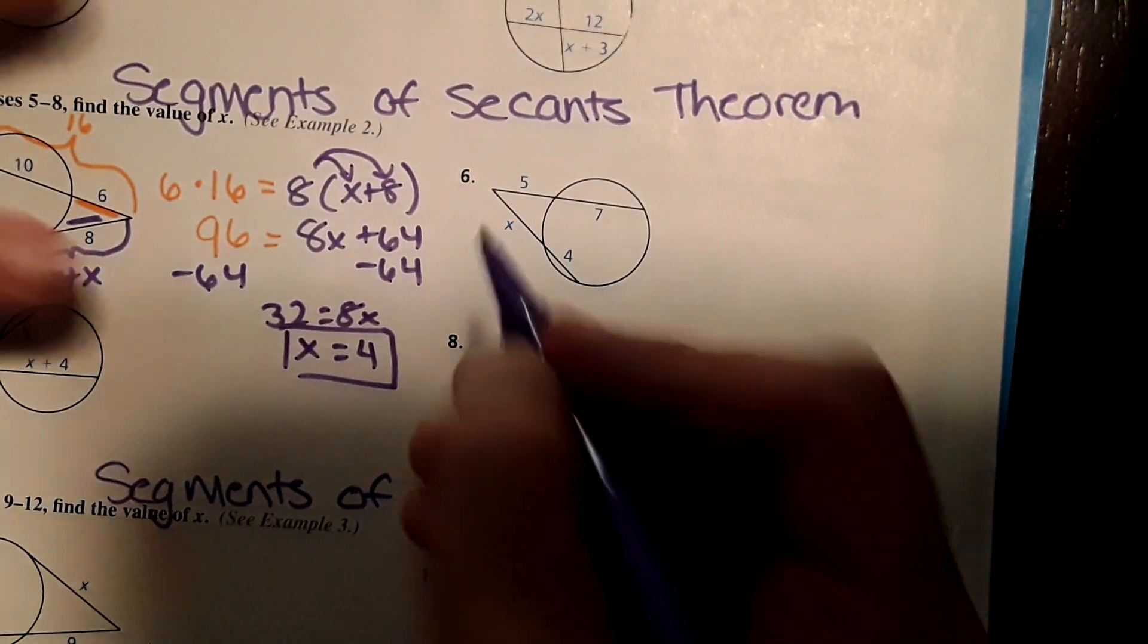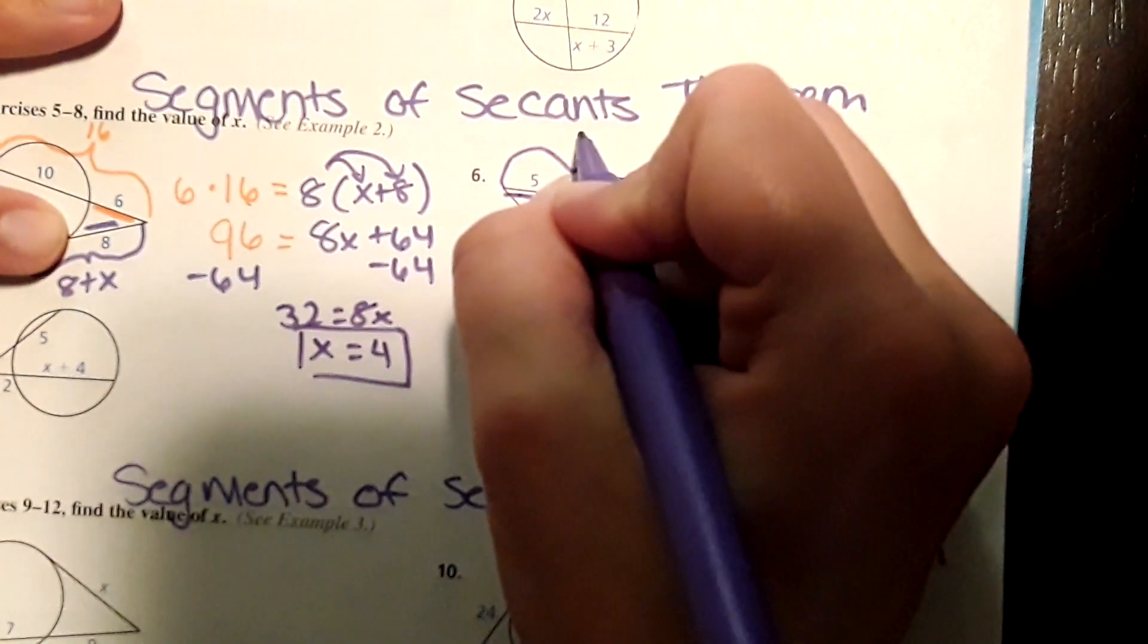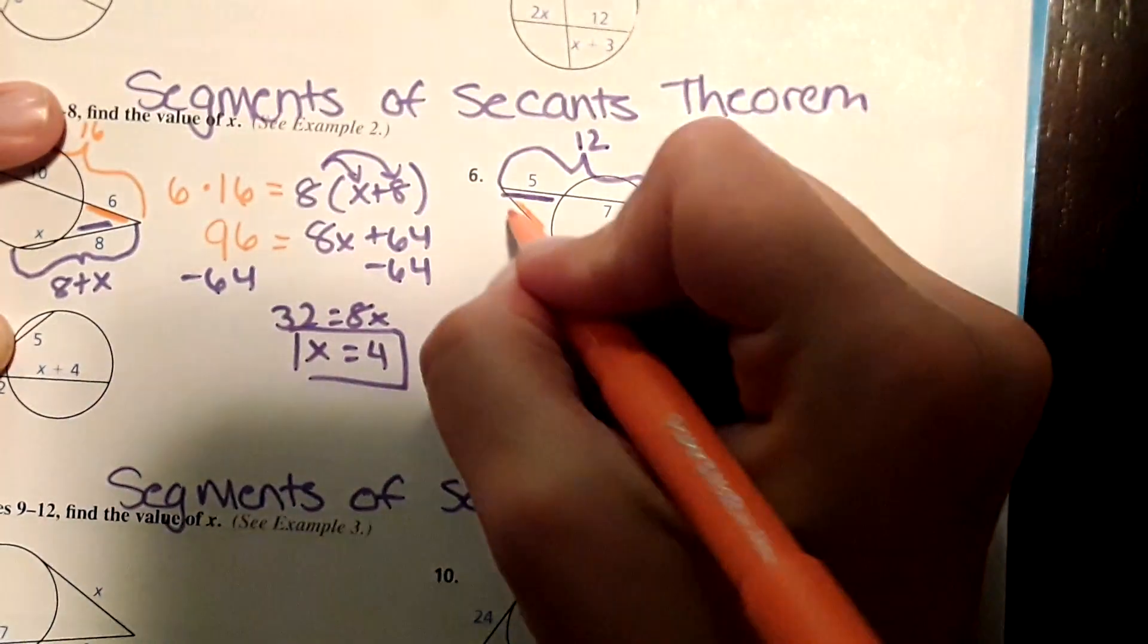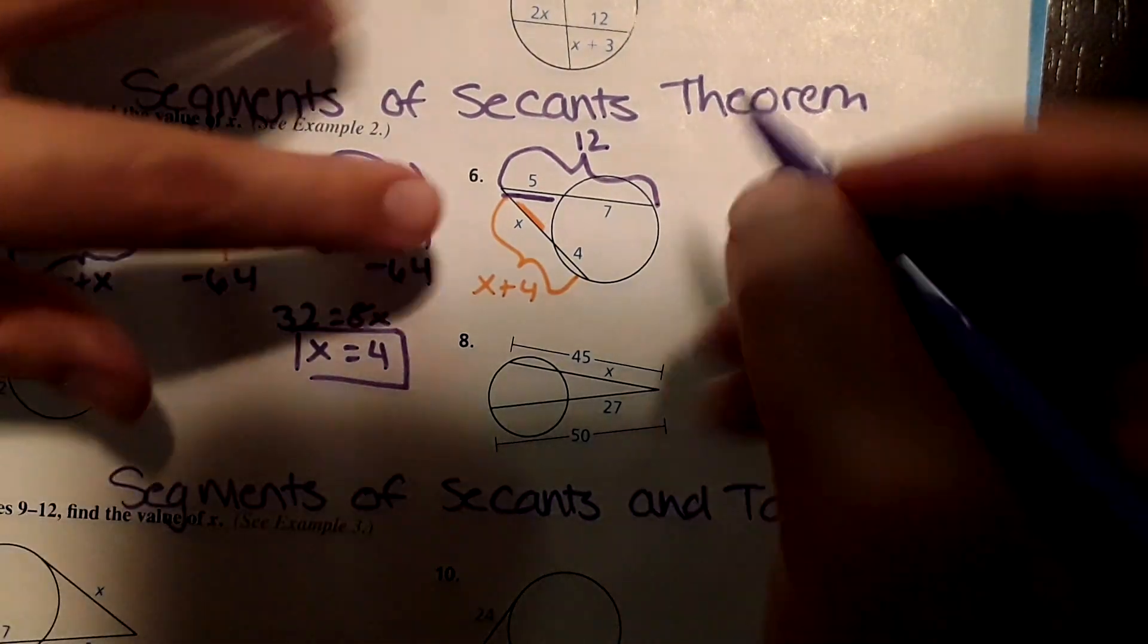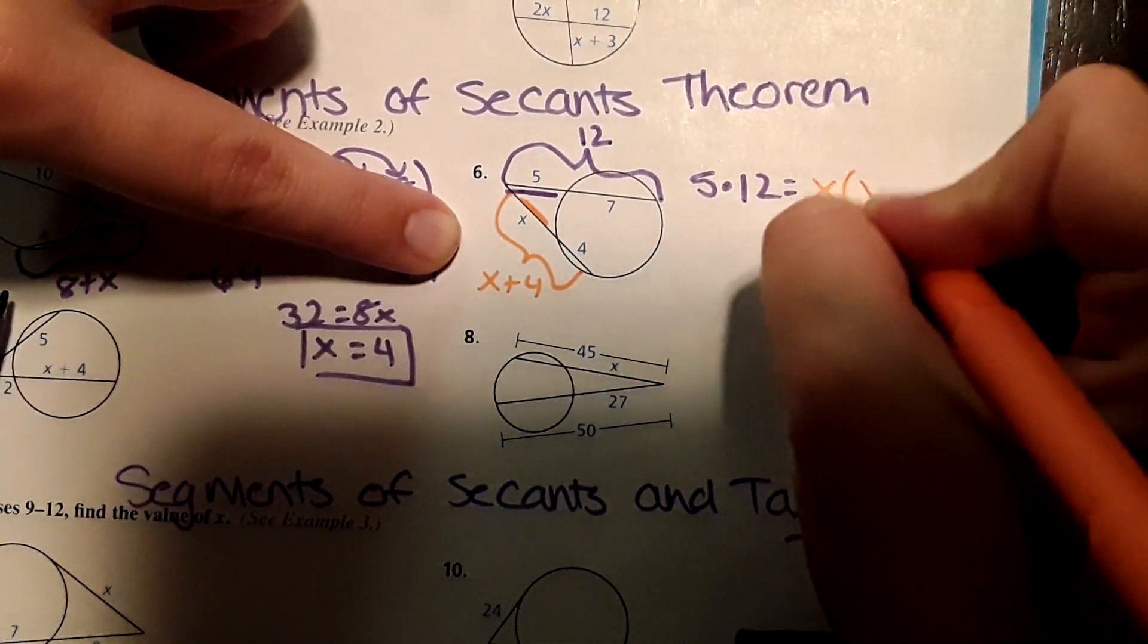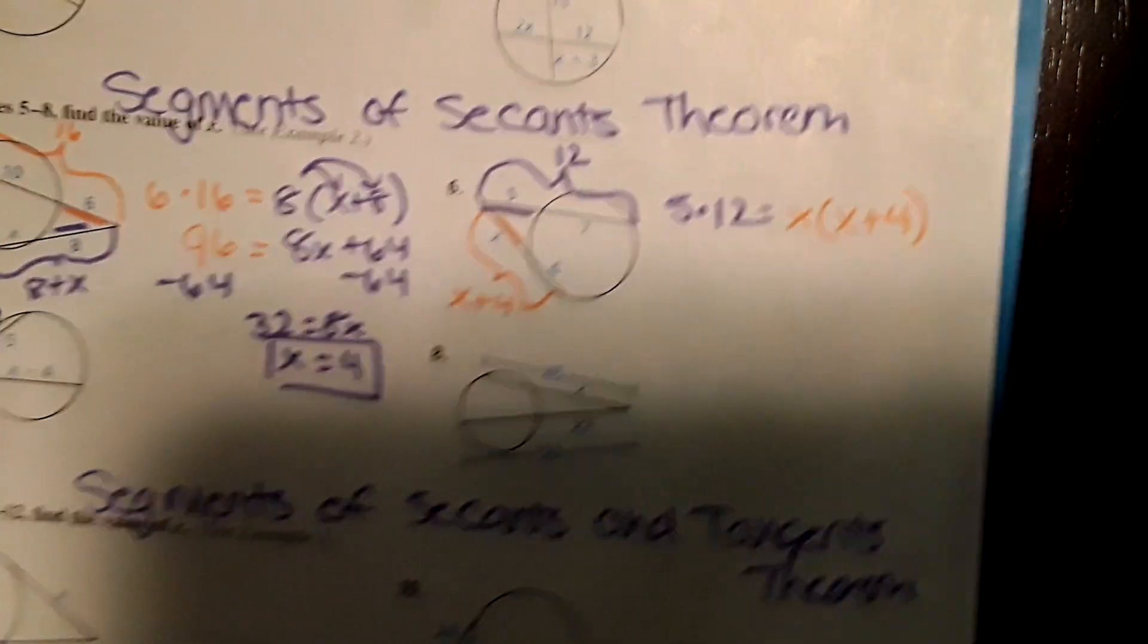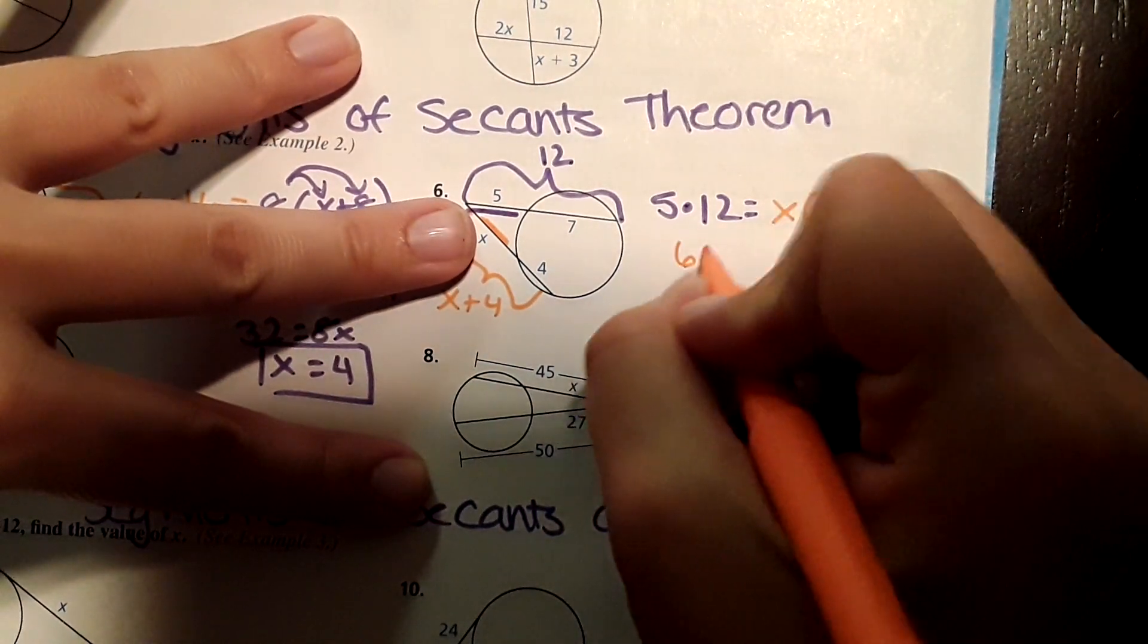Now we're going to repeat that one more time with number 6. Again, it's going to be this shorter part times the entire thing: 5 plus 7 is 12. Then again, the shorter part times the whole thing, and this would be X plus 4. So we're going to do 5 times 12 equals X times X plus 4.